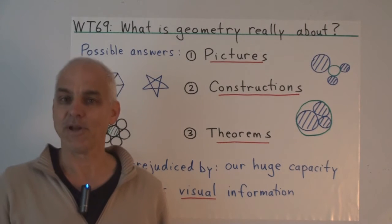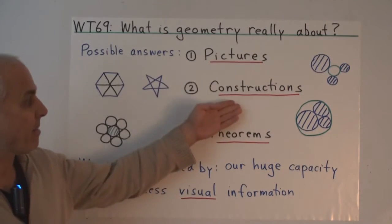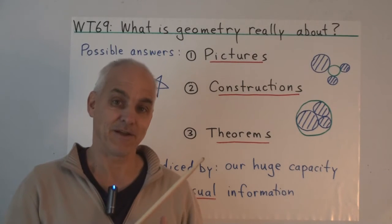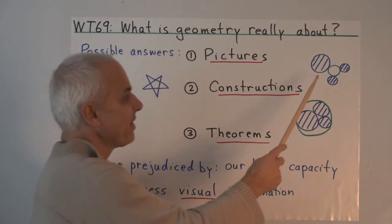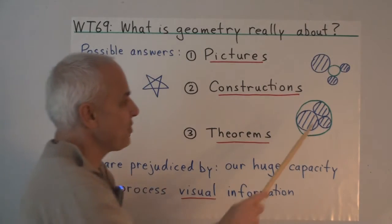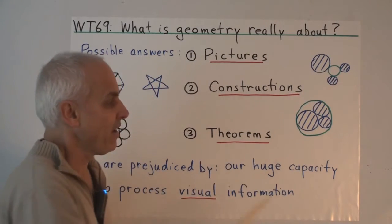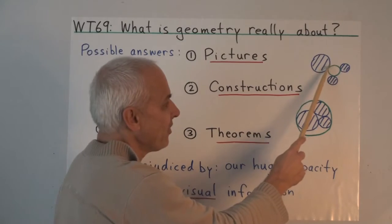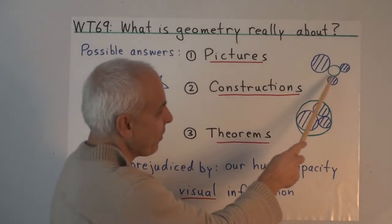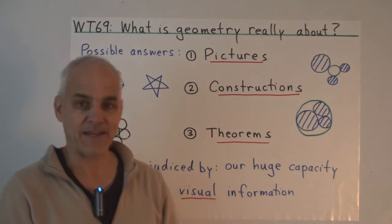Somewhat later, when the Greeks started thinking about geometry more formally, they might have answered this question with the idea that geometry is constructions. For example, the famous problem of Apollonius asks, how do you construct a circle which touches three given circles? So the blue ones are given, and we want to try to find a green one which touches all three of them. Well, in fact, there's more than one solution. You can try to convince yourself that there are in fact eight solutions.